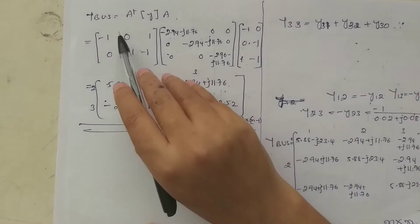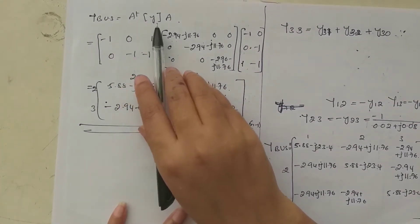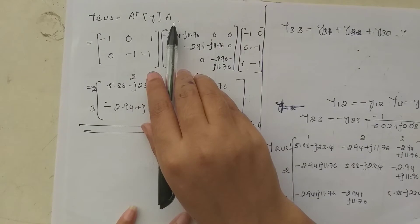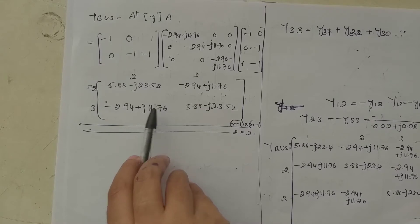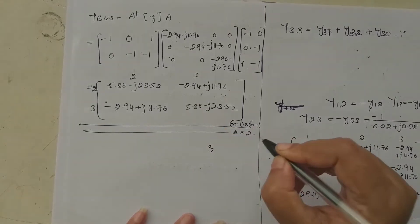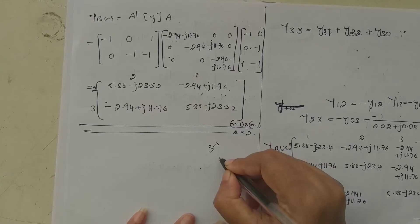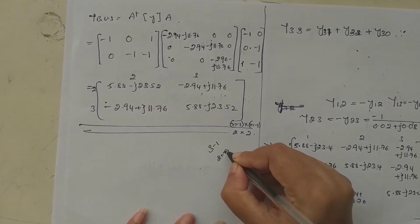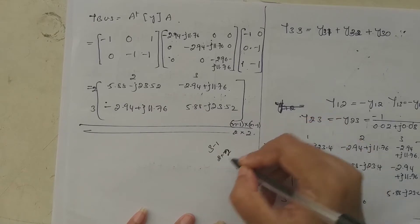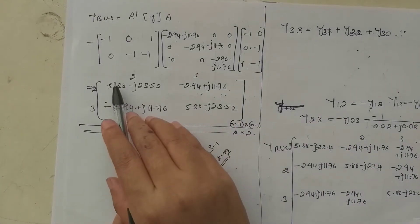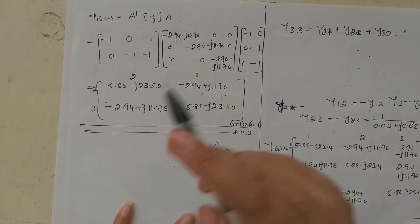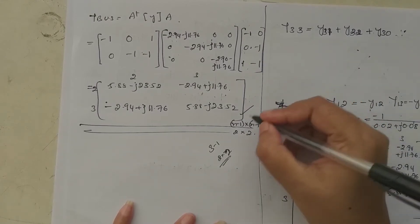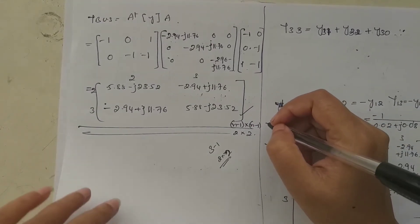From matrix Y, we calculate Y_bus using the formula: Y_bus = A^T × Y × A. Substituting the values gives the resulting matrix. Since we have three nodes, the matrix order is n-1 = 2, giving a 2×2 matrix. The column and row corresponding to the first reference node are eliminated, so we get an (n-1)×(n-1) matrix.